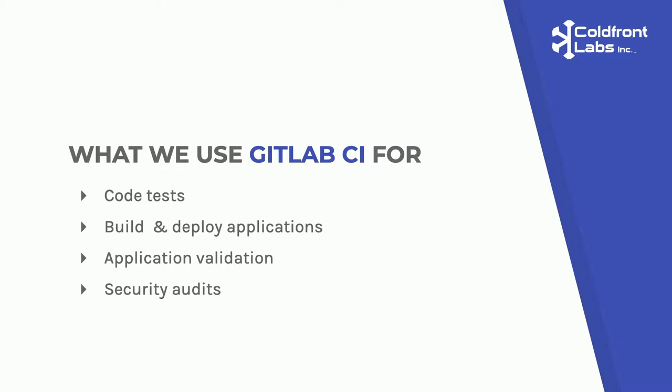At Coldfront, we use GitLab CI for a lot of different things. We run code checks and linting on our PHP, Sass, and JavaScript code. We use it to build and deploy our Drupal 7 and 8 sites, Vue.js projects, and even Docker images. We run validation tools like Backstop, Codeception, and Axe on our sites, and we run security audits using Drush, Composer, and npm.